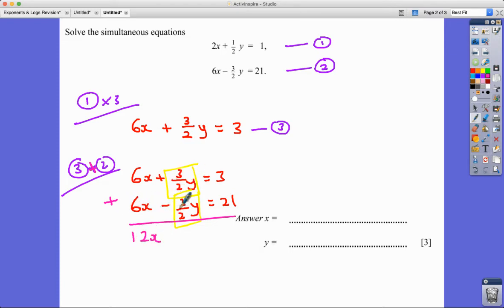3 over 2Y add a negative 3 over 2Y is nothing. And then I get a nice 24 over here, which brings me to a really nice answer for X of 24 over 12, which is 2. So that's done. So I've got my nice answer for that one.